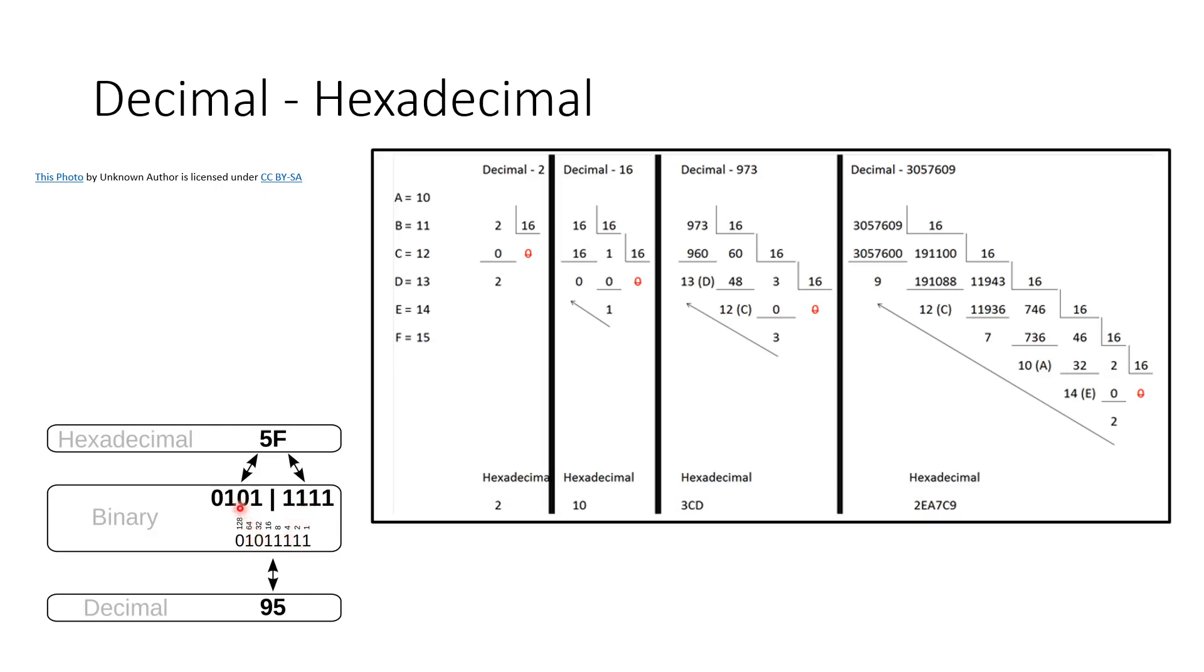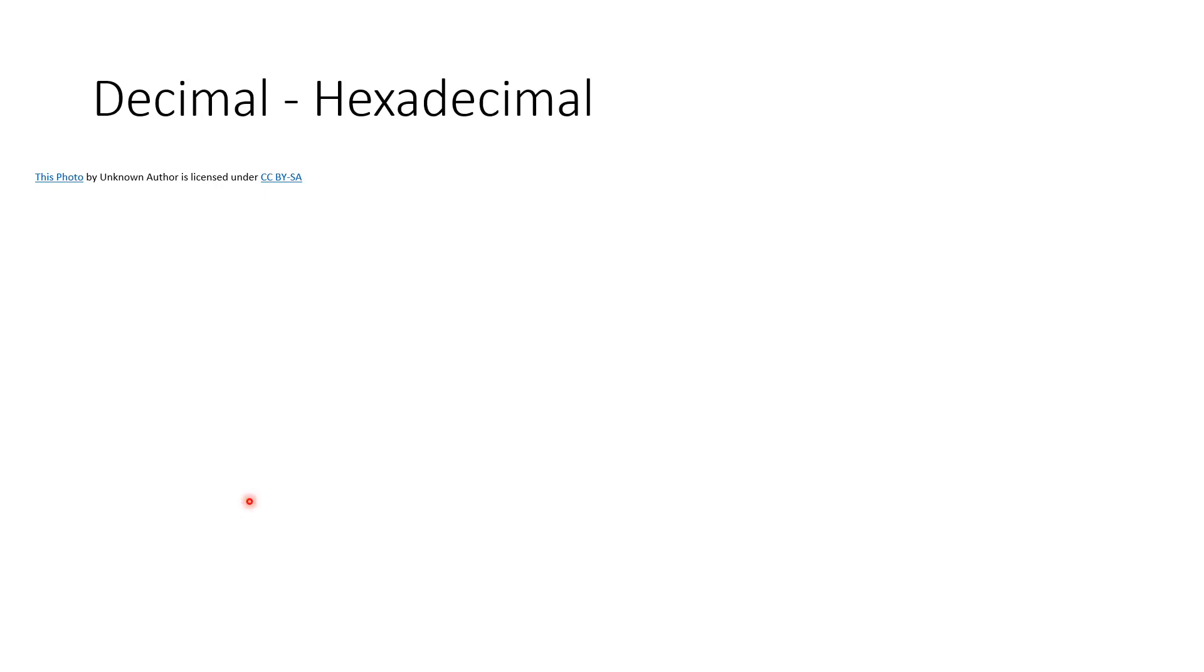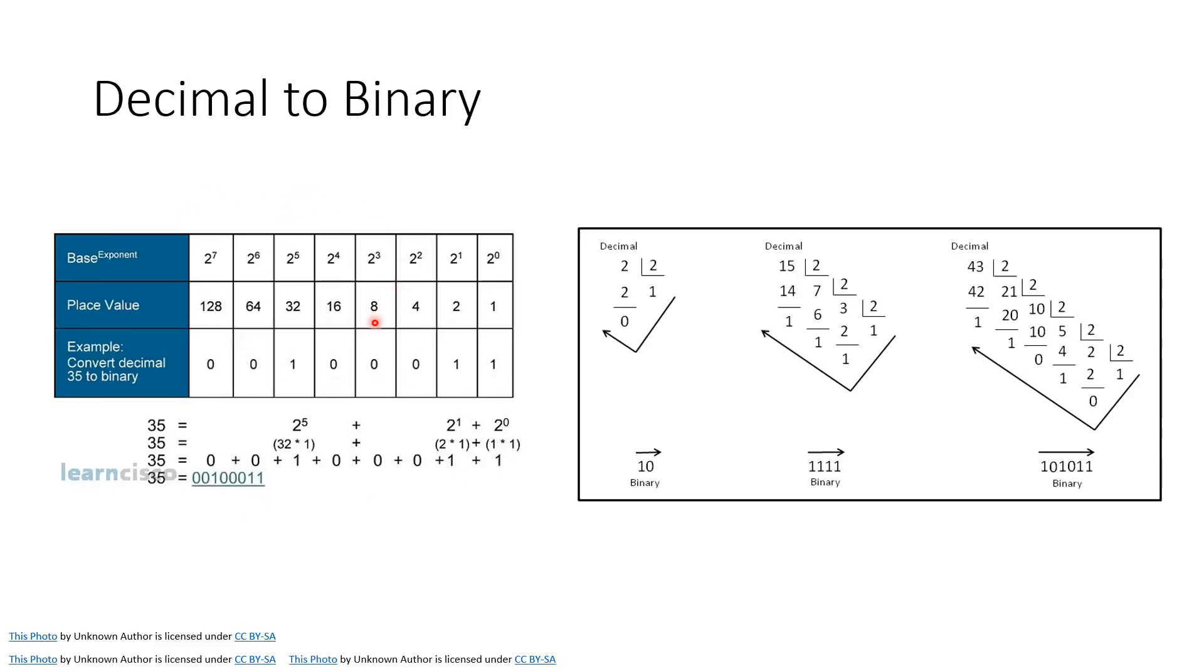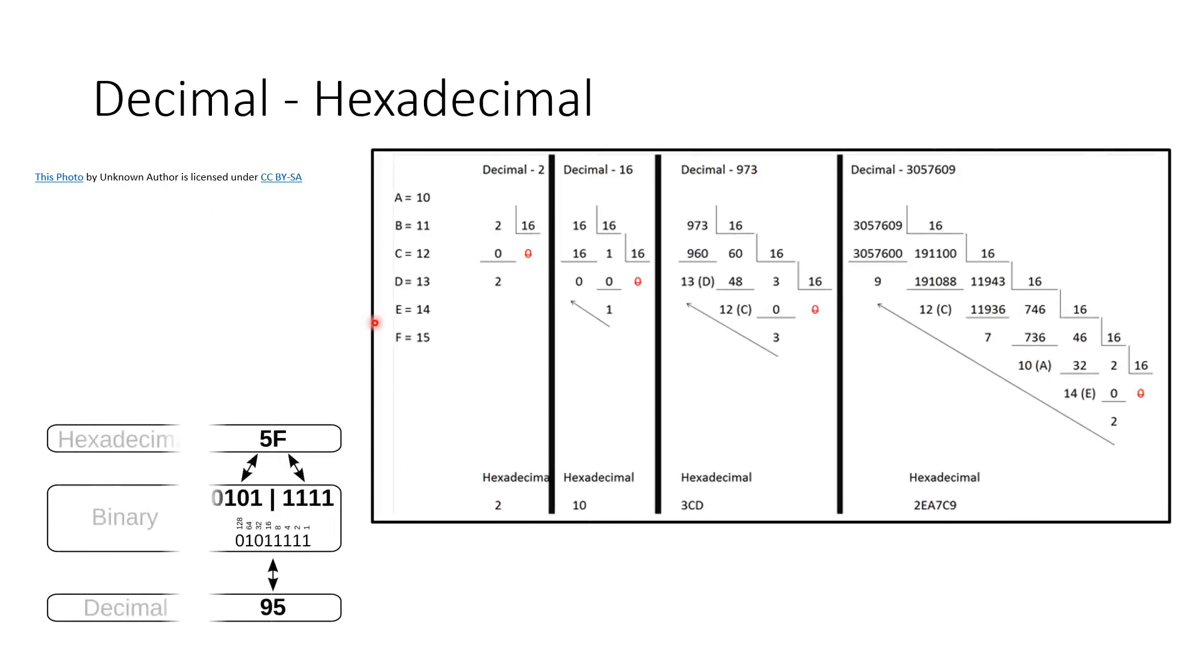Then here you can use the table that we used before to translate it either to hexadecimal or to binary. So we translate it: this will be 2 to the power zero, 2 to the power one, 2 to the power two. So we sum 2 to the power...